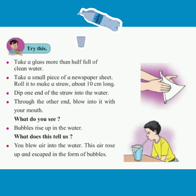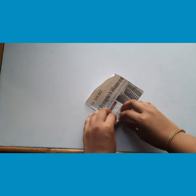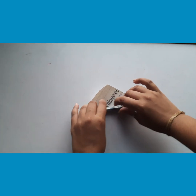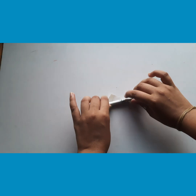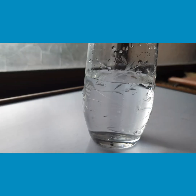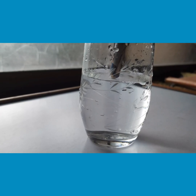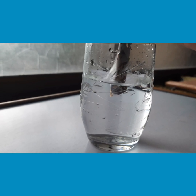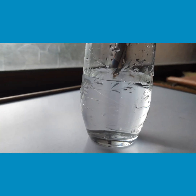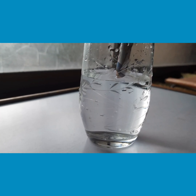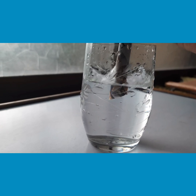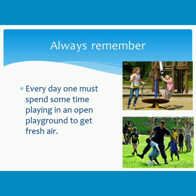Let's try this. Take a glass more than half full of clean water. Take a small piece of a newspaper sheet. Roll it to make a straw about 10 cm long. Dip one end of the straw into the water. Through the other end, blow into it with your mouth. What do you see? Bubbles rise up in the water. What does this tell us? You blew air into the water, and this air rose up and escaped in the form of bubbles.